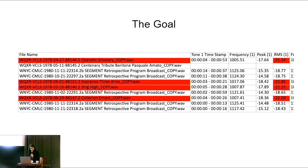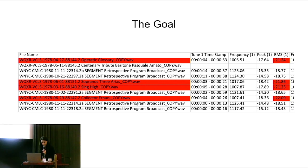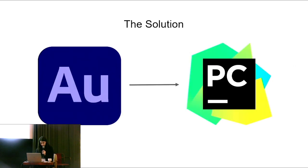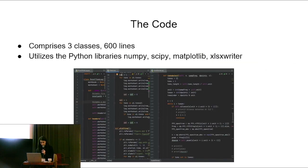So the goal or the desire is to have a concise report shortly after digitization indicating which digital files require immediate and closer attention. And I wrote a robust prototype using Python code that essentially does just this. The code is three classes, 600 lines in length. It utilizes the Python libraries numpy, scipy, matplotlib, and Excel writer.